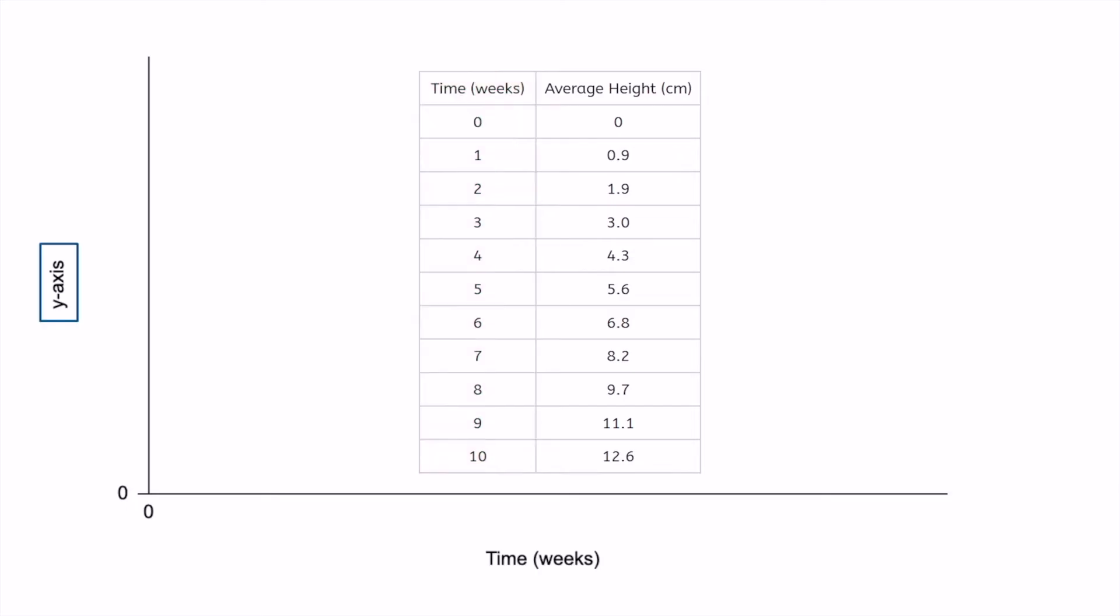The y-axis always contains the dependent variable, or the variable that is measured. In this case, we have measured the average height of the strawberry plants, so we'll title our y-axis average height, again, including our unit of measurement.